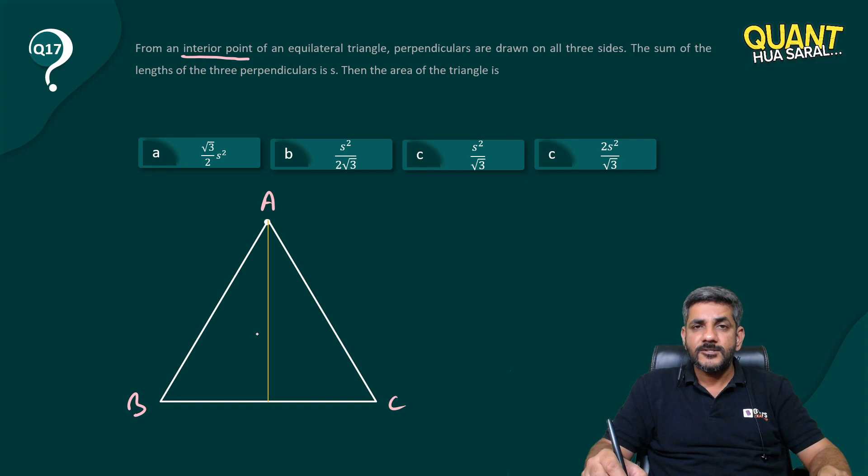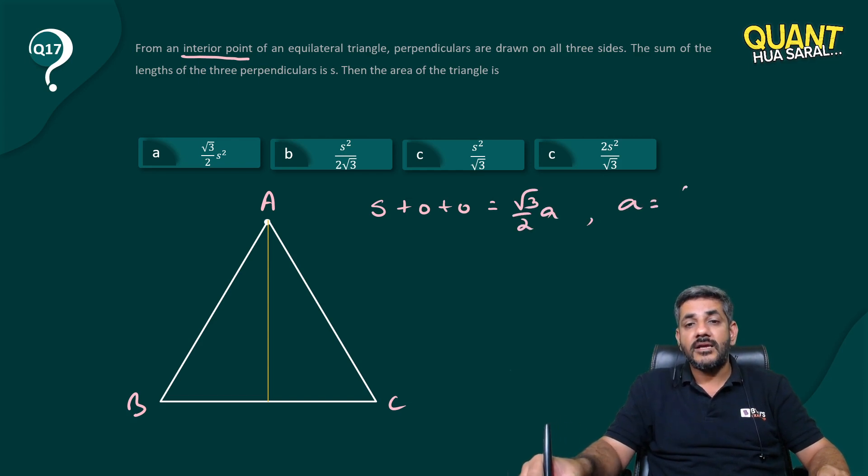We all know the length of that perpendicular is root 3 by 2 a. So sum of the three perpendiculars is actually s plus 0 plus 0, and that is equal to root 3 by 2 a. So can't I say from here that a is 2s by root 3?